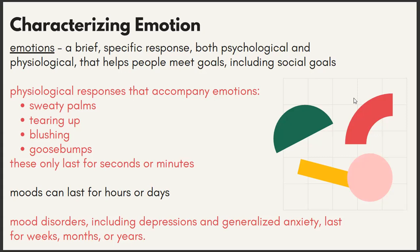How do emotions affect us physiologically — that is, how our body works? Some physiological responses that accompany emotions include sweaty palms, which can happen when you're nervous or excited, such as when giving a speech or presentation. Tearing up can happen whether you're really happy, really sad, or angry. Blushing can occur because you're nervous, excited, or embarrassed. Goosebumps can come from excitement, fear, or being frightened.